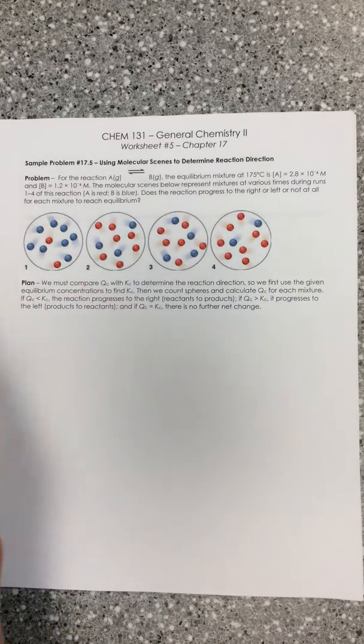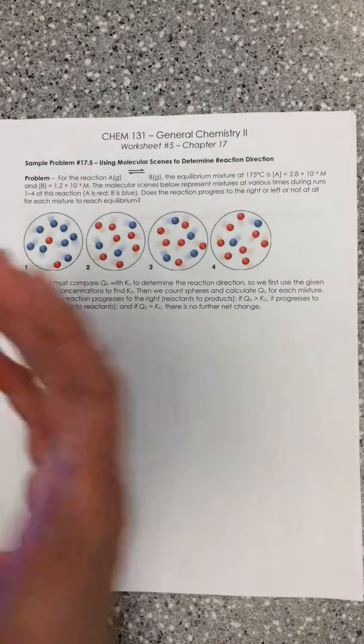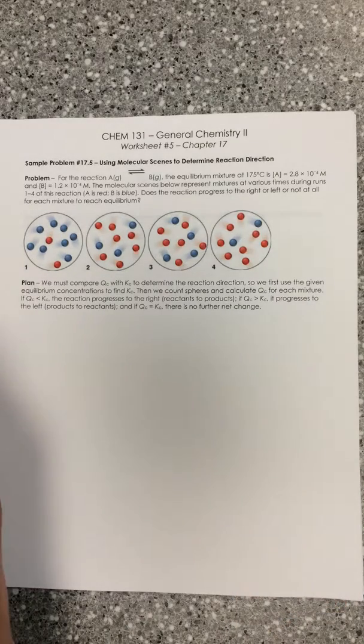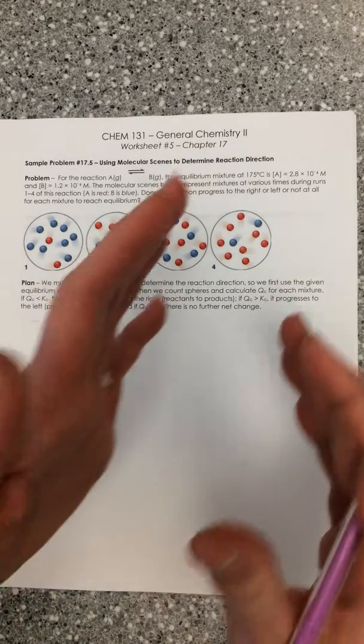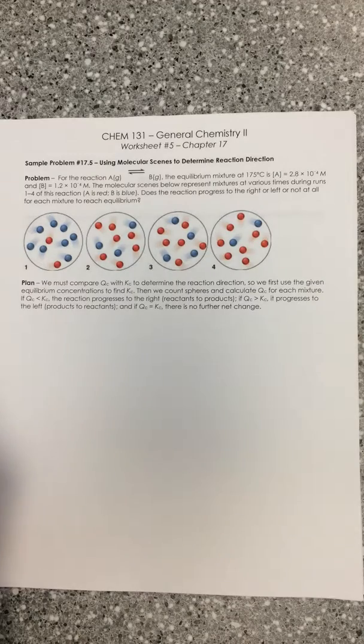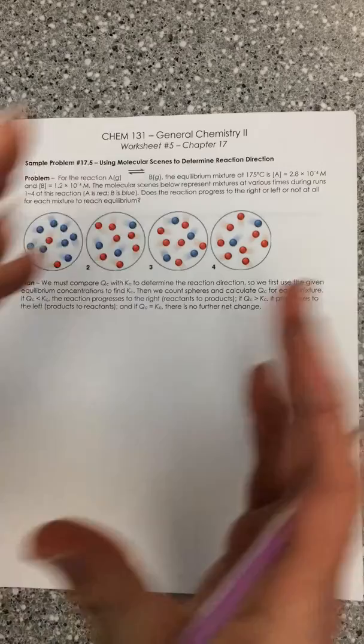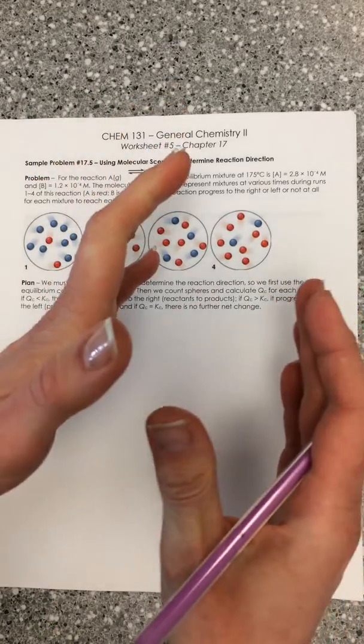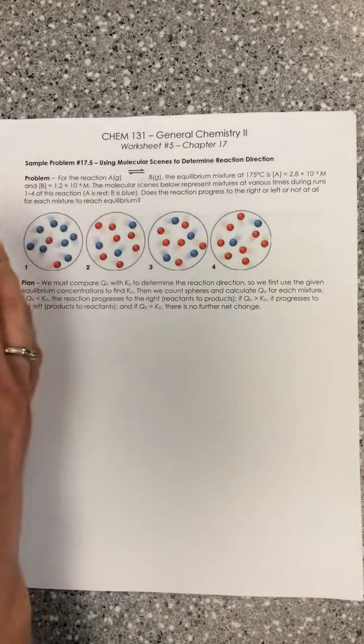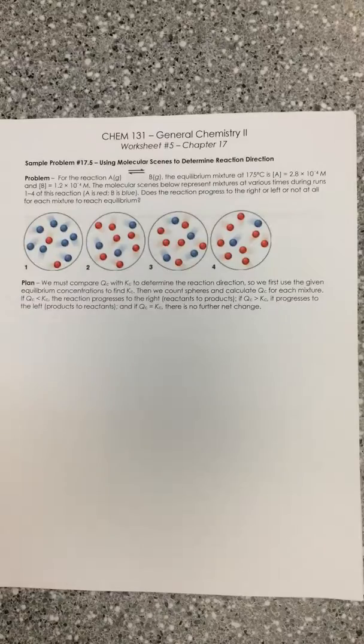So what you have to really figure out is, am I reactant heavy or am I product heavy? If you're reactant heavy, that means you need to make more products and shift towards the right. Conversely, if Q is larger than K, that means you're product heavy and you need to actually have the reaction shift back the other way in order to make more reactant.